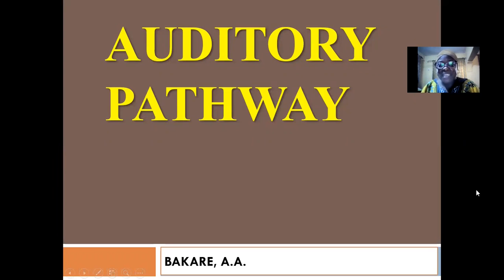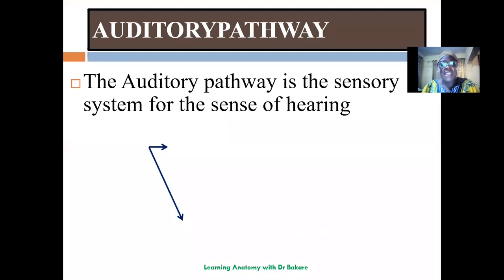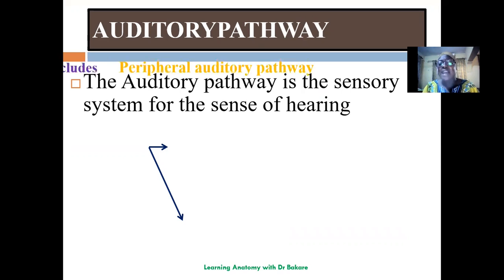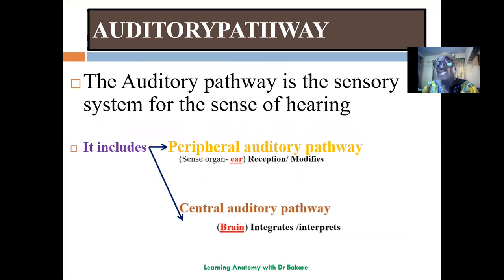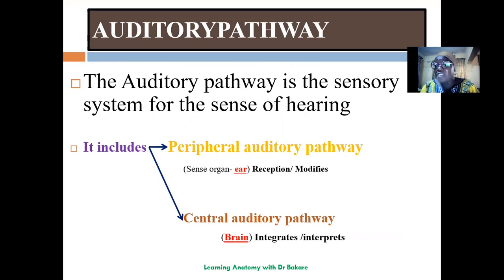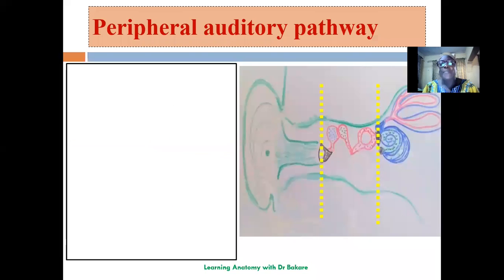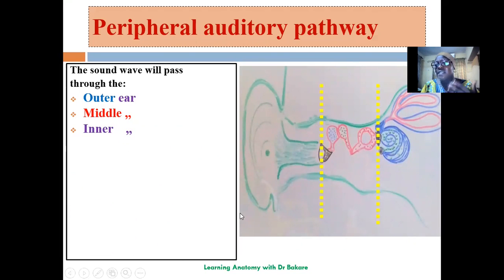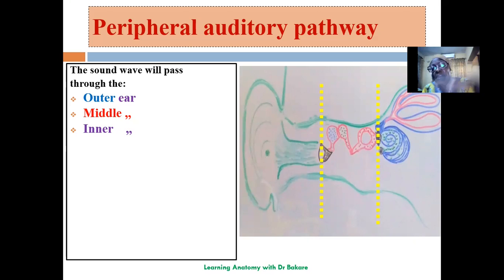Welcome. Our topic is the auditory pathway — a pathway that allows for hearing to take place. It is broadly divided into two: the peripheral auditory pathway and the central auditory pathway. The peripheral auditory pathway occurs within the ear, while the central auditory pathway occurs within the central nervous system. Sound waves from the external environment must pass through the peripheral system before going to the CNS where interpretation takes place.